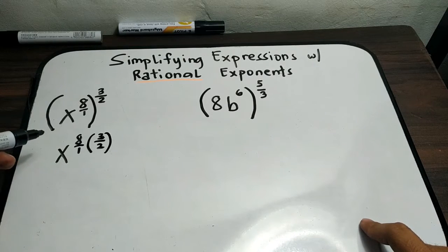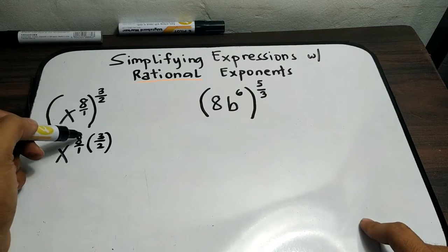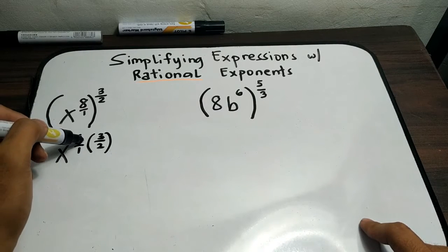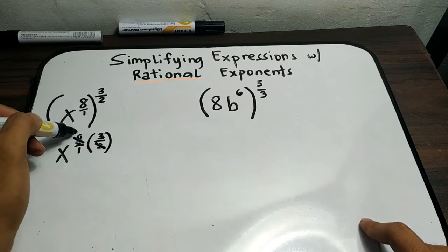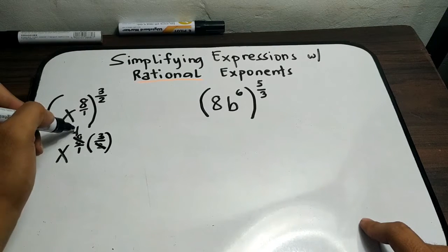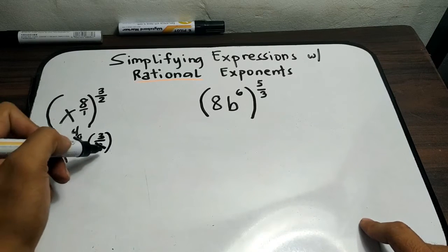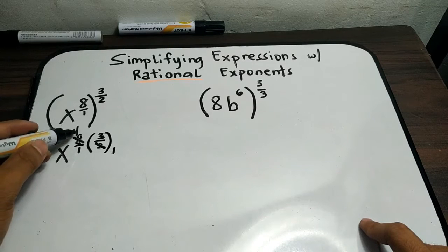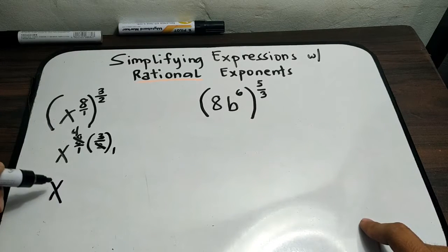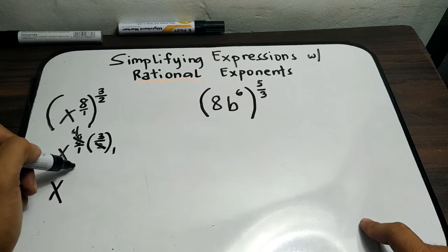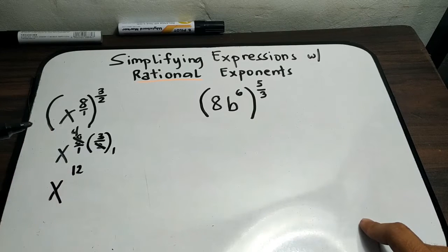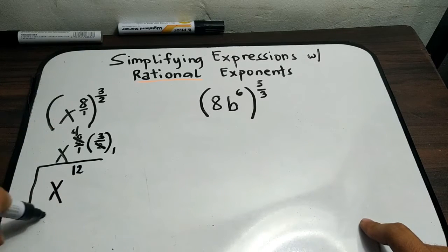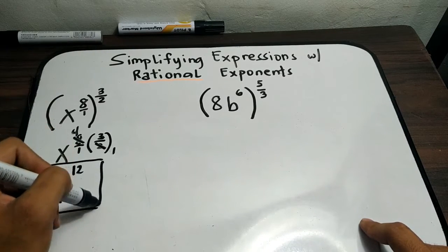To simplify, you can cancel 8 and 2 — 8 divided by 2 is 4, and 2 divided by 2 is 1. So you have 4 times 3 in the numerator and 1 times 1 in the denominator. The answer is x raised to 12.